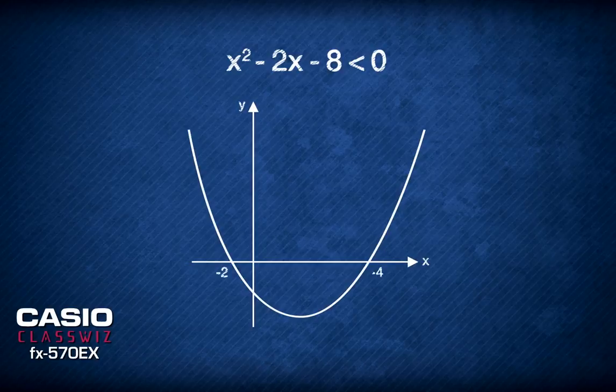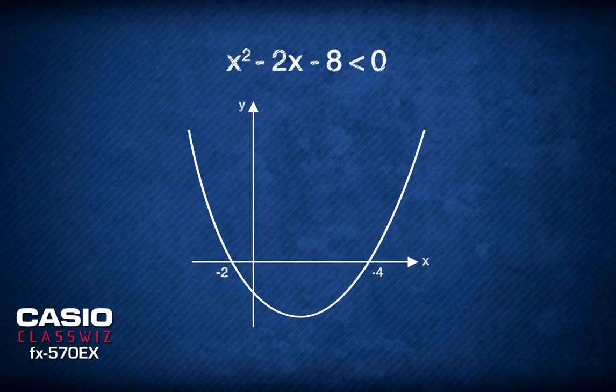This inequality requires the quadratic values that are negative. This means the region of the graph required is below the x-axis, which corresponds to the region of x between negative 2 and 4. Thus, this is the range of x that satisfies the inequality.